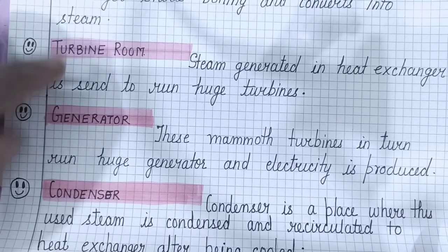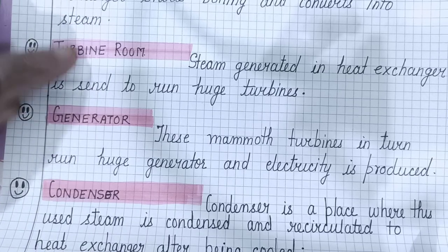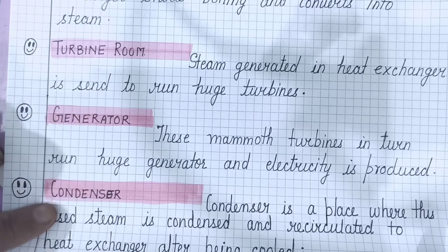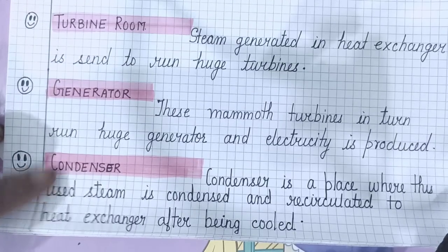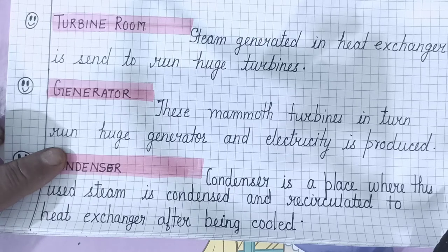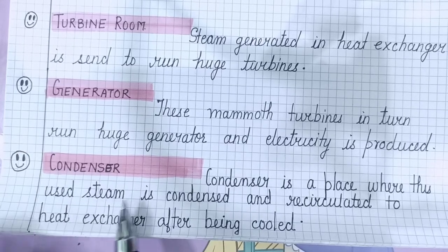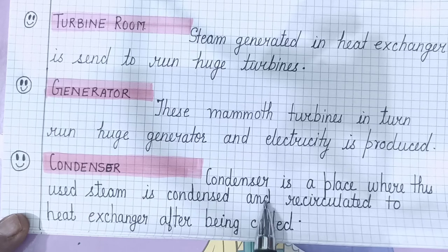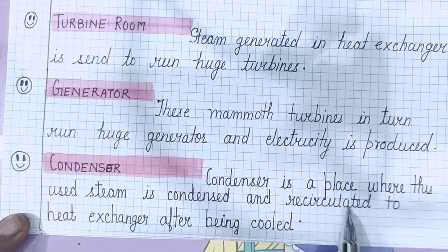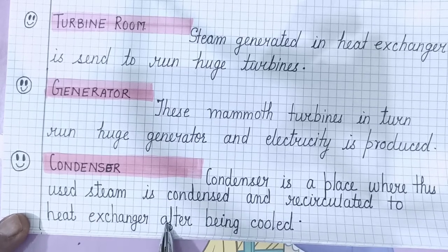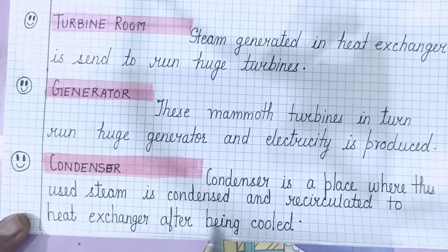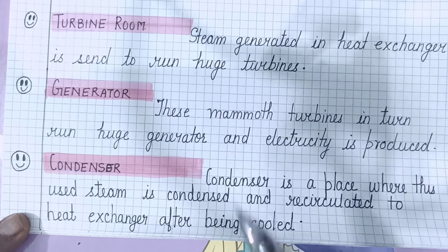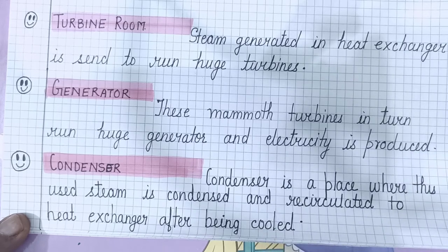The steam passing through the turbine then moves to the condenser, where the used steam is condensed and recirculated to the heat exchanger after being cooled. This is the complete process going on in a nuclear reactor.